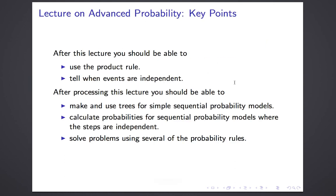Let me run through what you should be able to do. You should be able to use the product rule and tell when events are independent. With a little bit of practice, you should be able to make and use trees for simple sequential probability models. You should be able to calculate probabilities for sequential probability models where the steps are independent. And you should be able to solve problems that use several of the probability rules together — the product rule, the sum rule, the simple sum rule, and the complement rule. Interesting problems will often require using a few of these in conjunction.